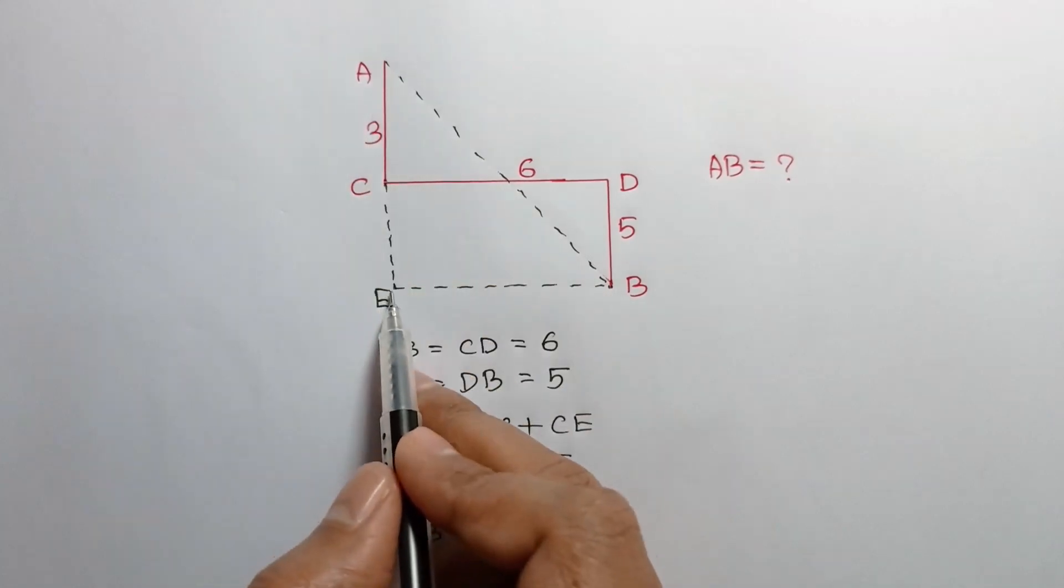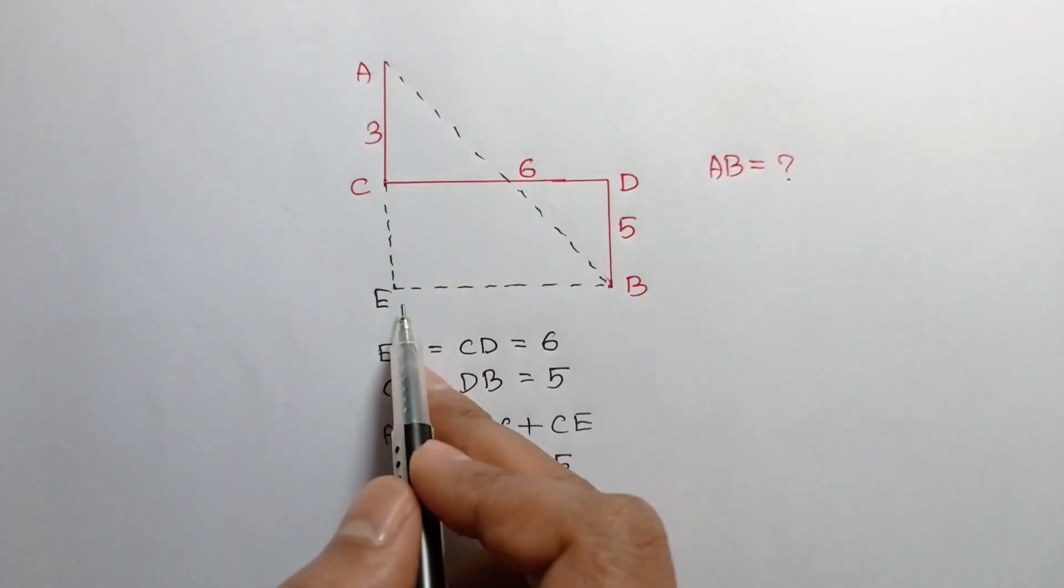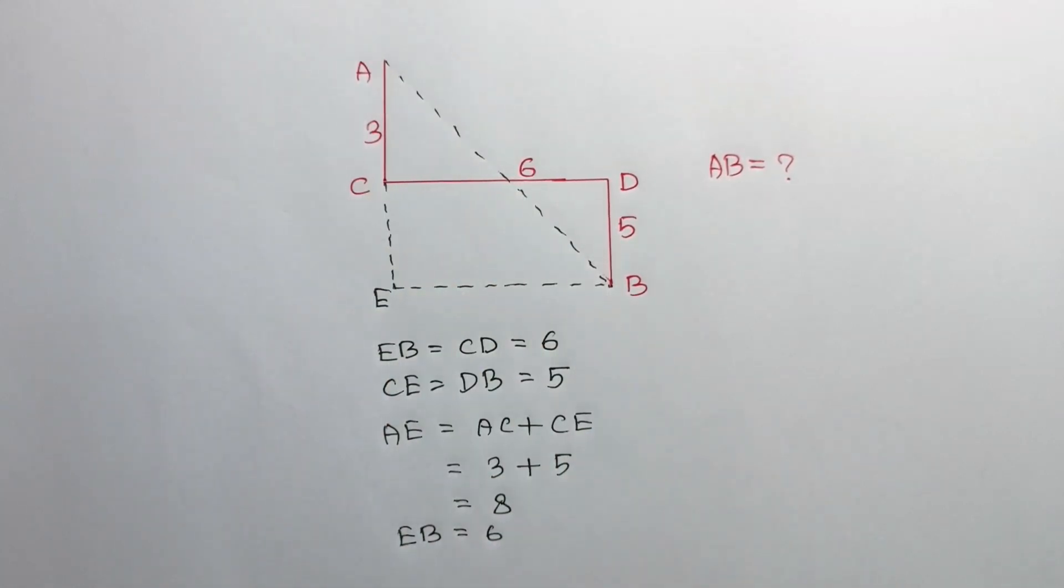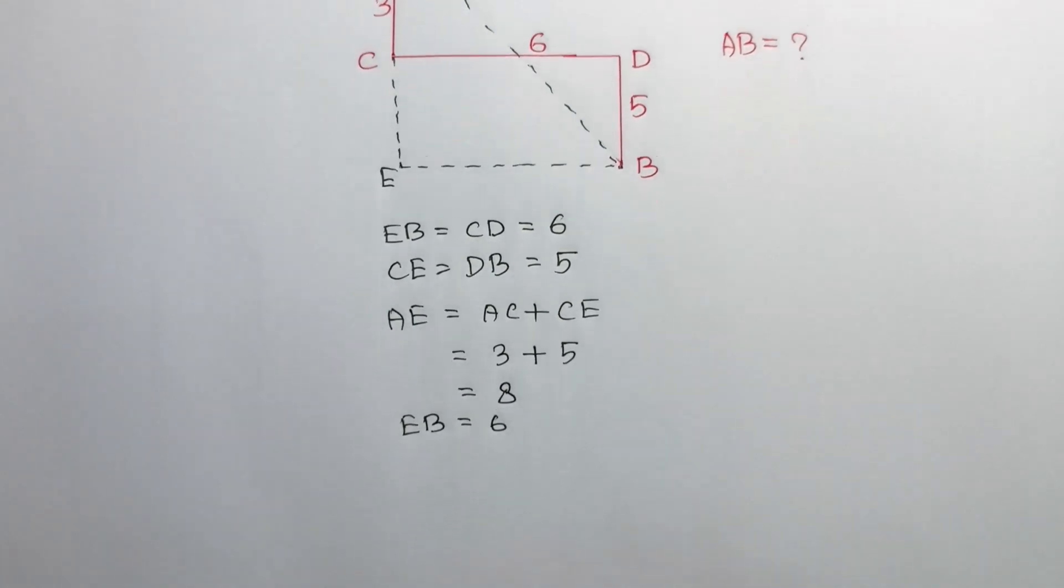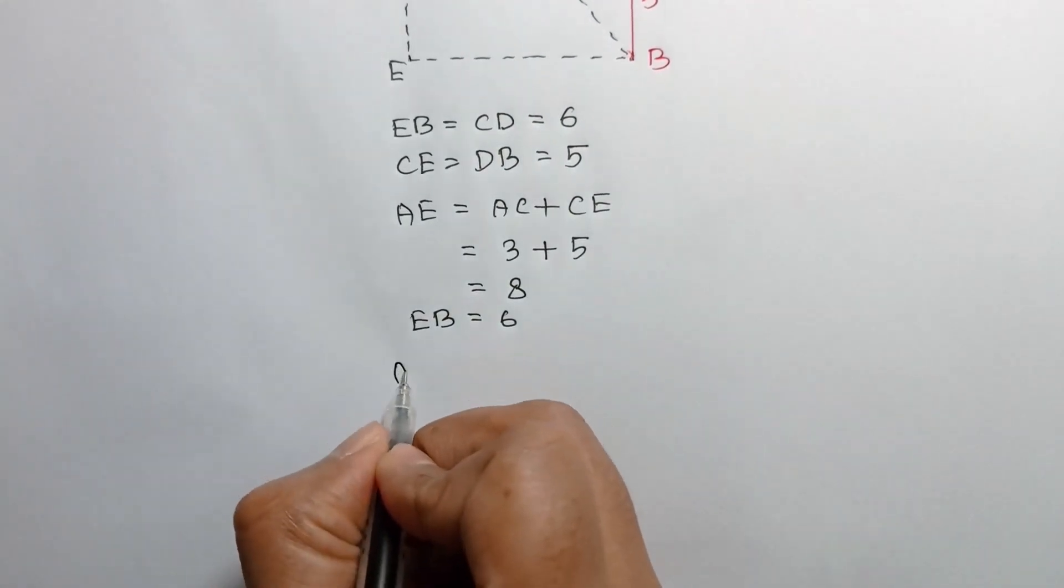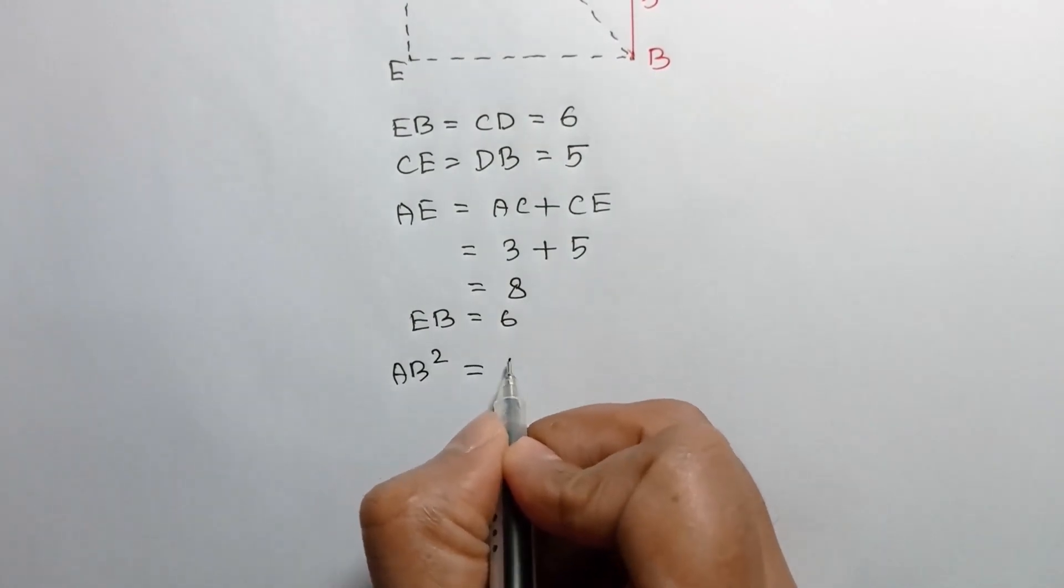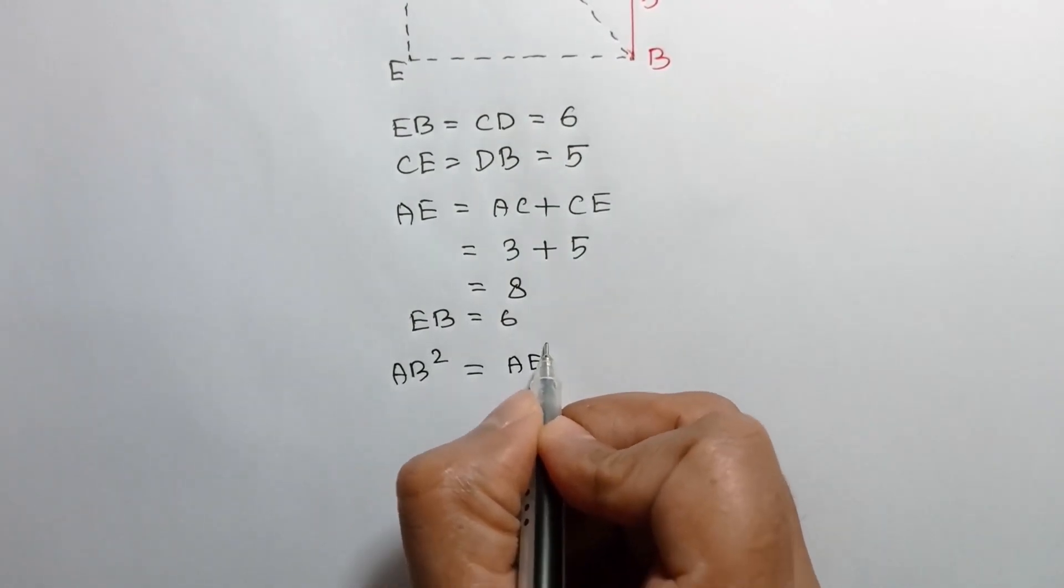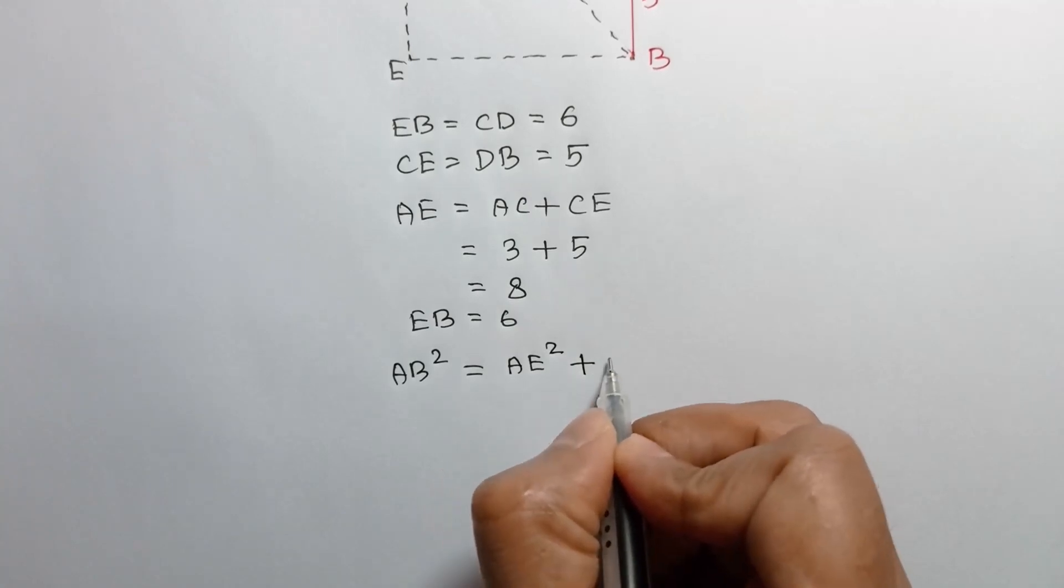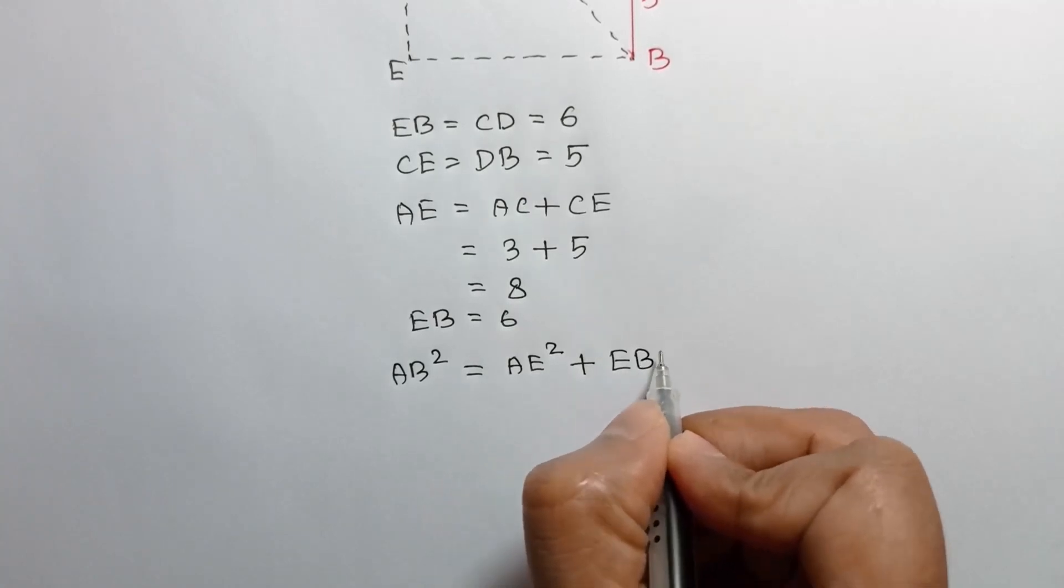We can write now for triangle AEB, according to Pythagorean theorem, we can write AB square is equal to AE square plus EB square.